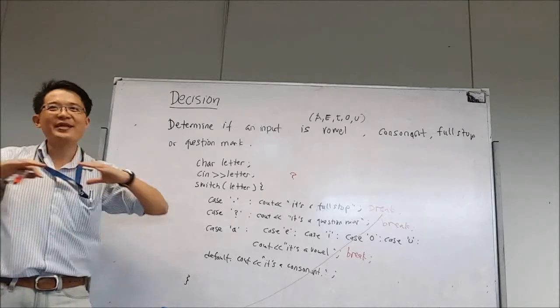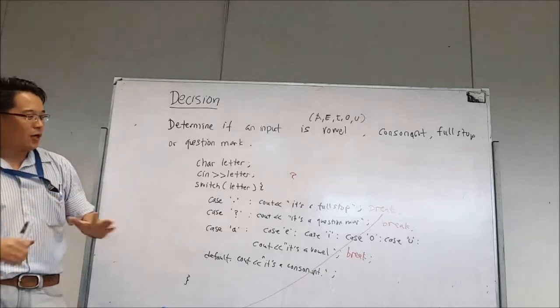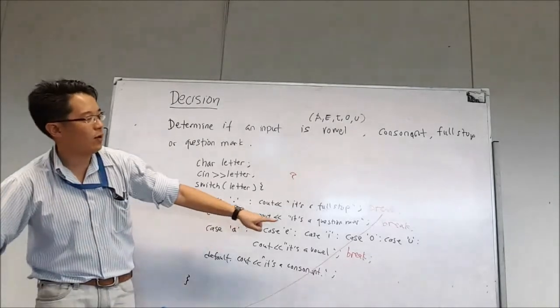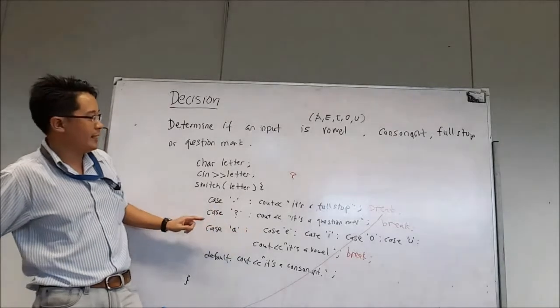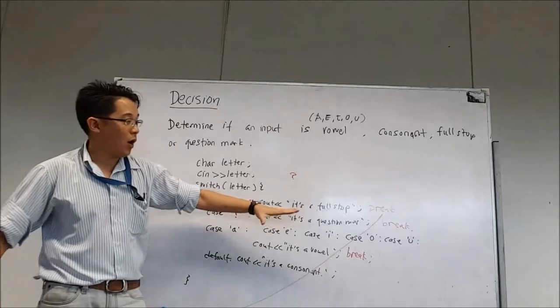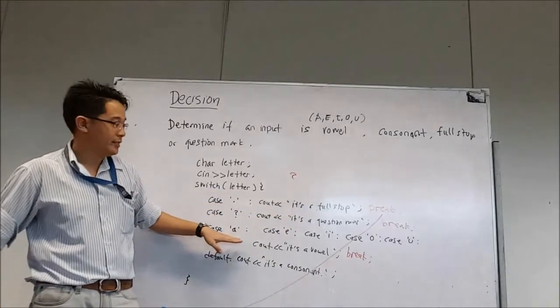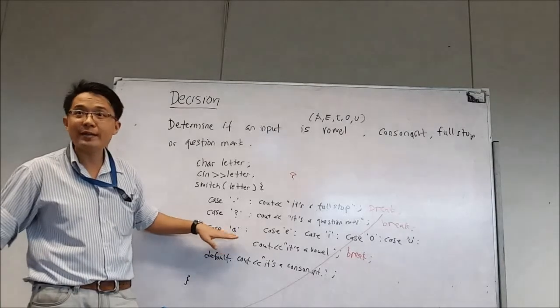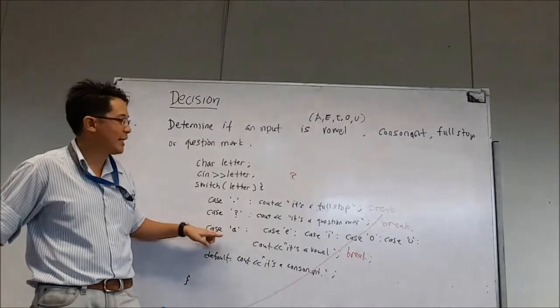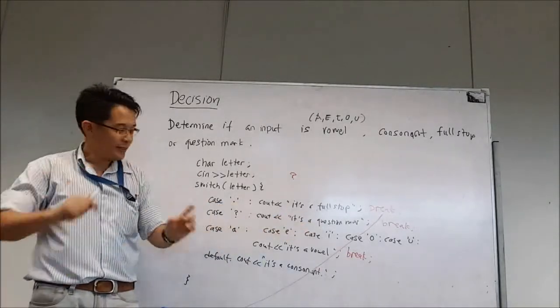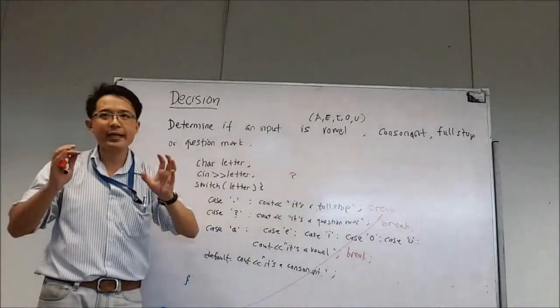It straight away terminates the program, then return one, even zero. So okay, how about this one? Case A, case E, I, O, U, right? Now colon, case E, there's nothing, there's nothing, right? It means that A, E, I, O, U, all this can use C out is a vowel. All of them are sharing C out is a vowel, break. All of them are sharing. So you want to make them share what you do? You just simply put them case A, case E, case I, instead of having some code after the case A, right? You straight away just put them together, so you're combining them.